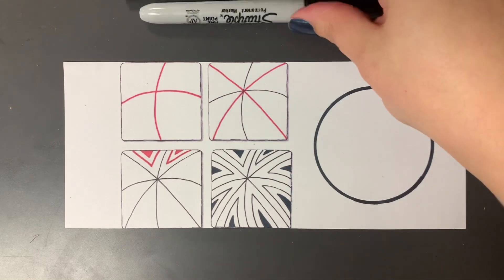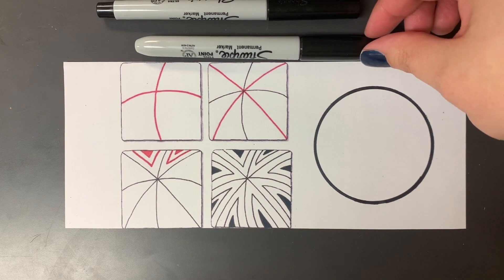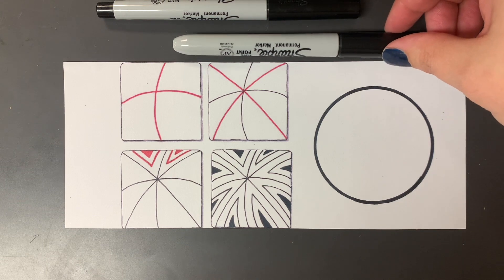When you're Zentangling, if you're using Sharpies, you should use the Sharpie pen for drawing and then use the Sharpie marker for coloring stuff in. Don't use the Sharpie marker for drawing.